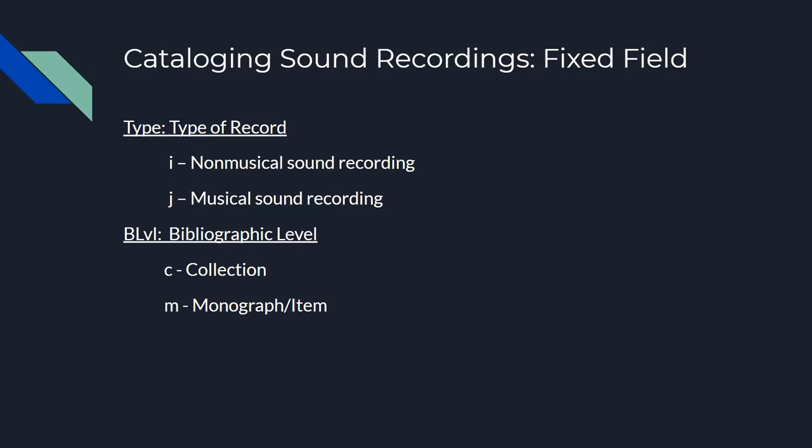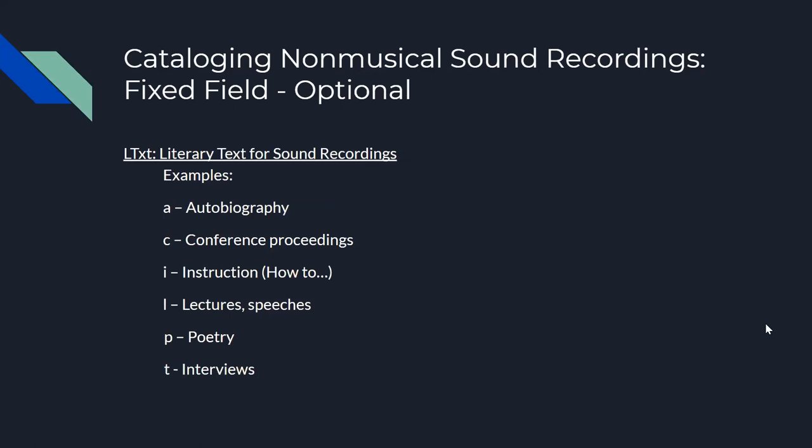However, there are two other elements that are optional for sound recordings. The first is literary text for sound recordings, which is used for non-musical sound recordings and describes the type of spoken word or sounds that can be found on the items being described. Common options include autobiography, conference proceedings, how-to instructions, lectures, poetry, and interviews.